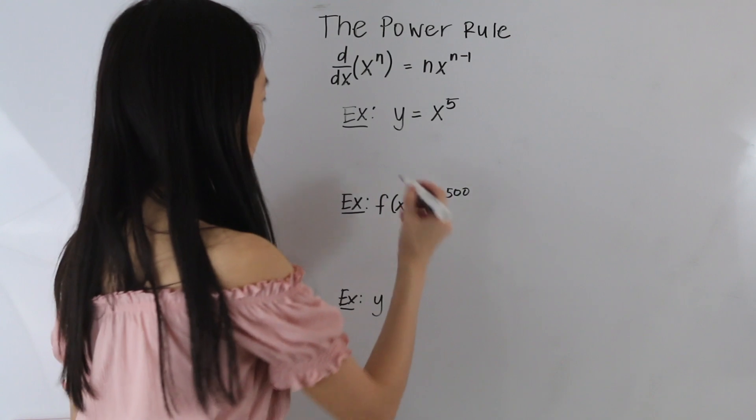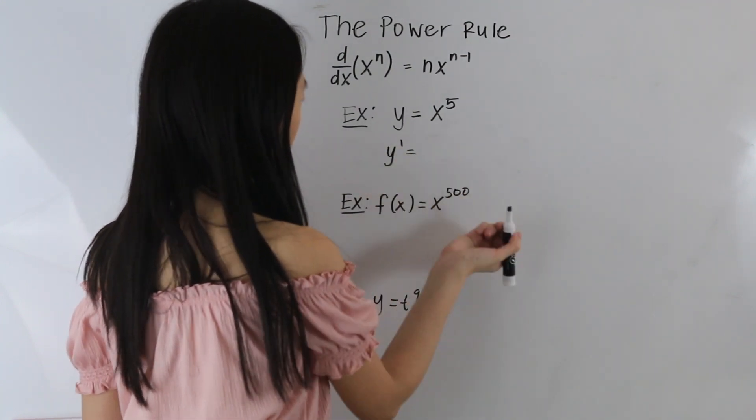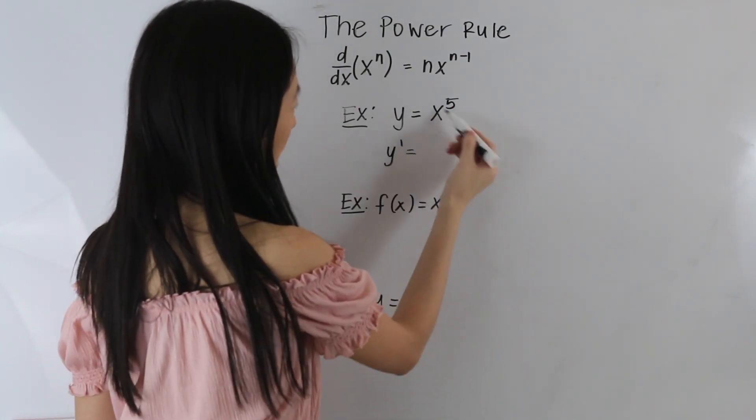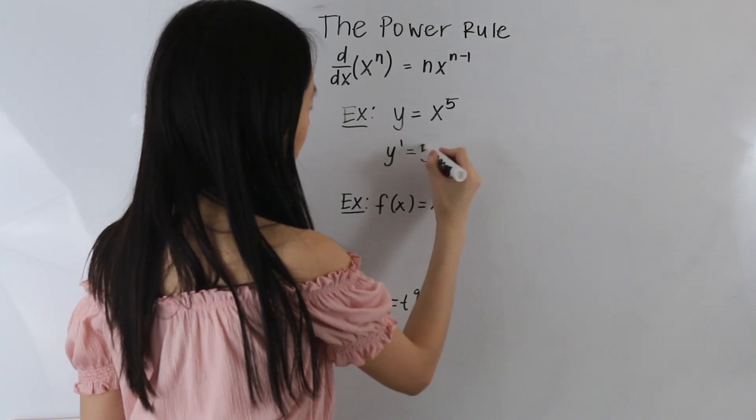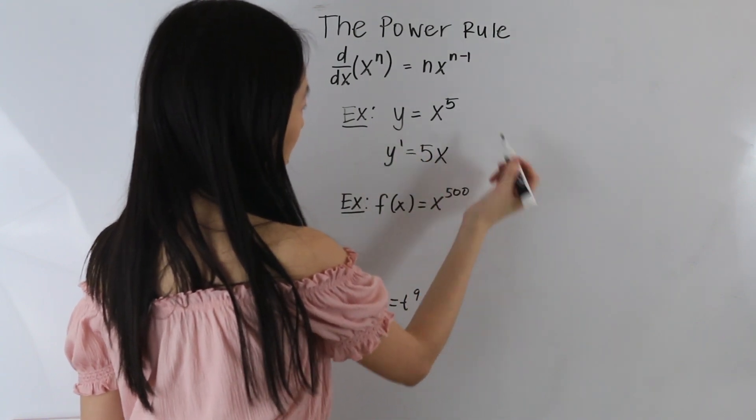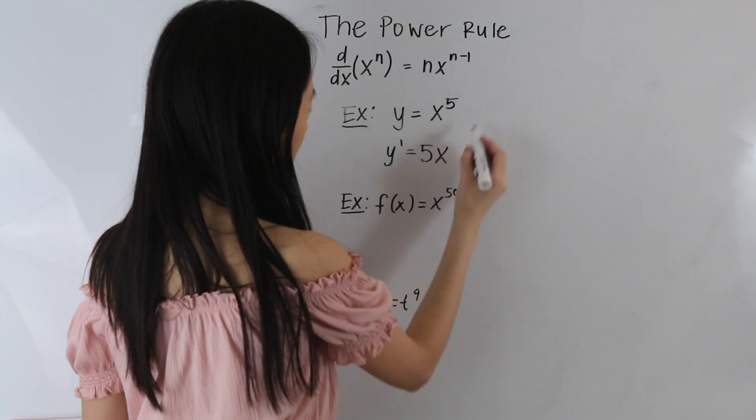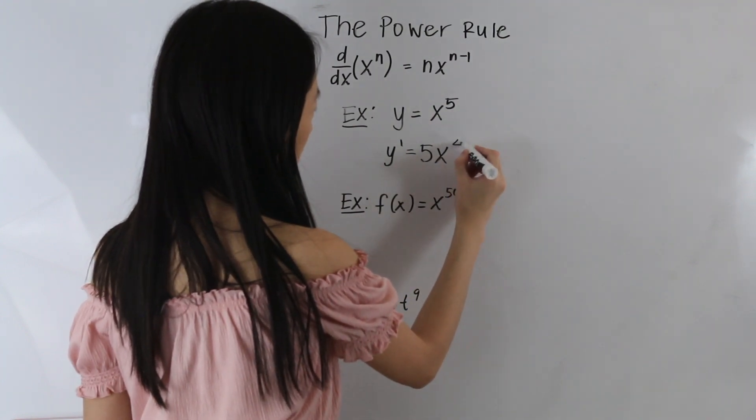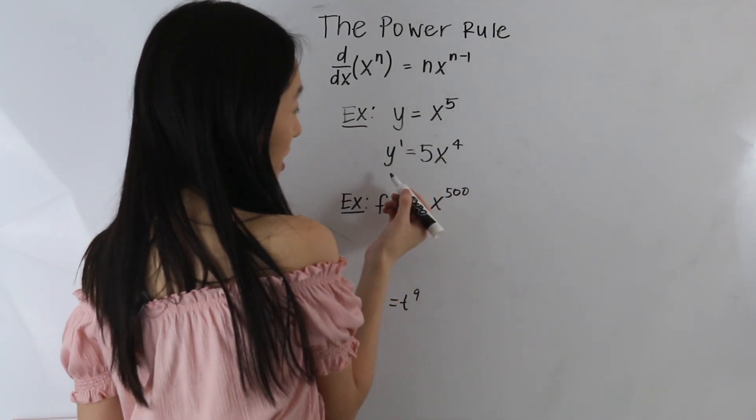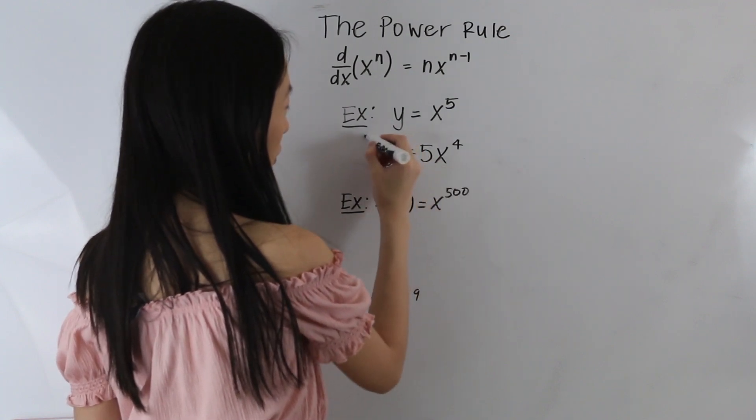So let's go ahead and take its derivative. So we have y prime is equal to, and so now we bring this power down. So we have 5x, and then we subtract 1 from this power here. So 5 minus 1 is equal to 4. So we have derivative of y is equal to 5x to the fourth.